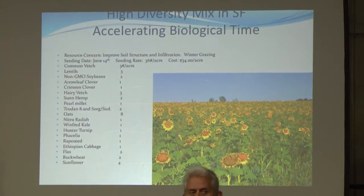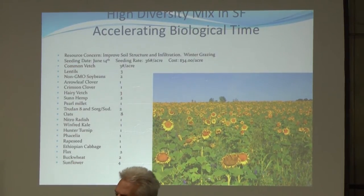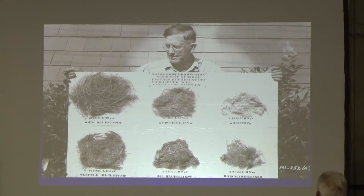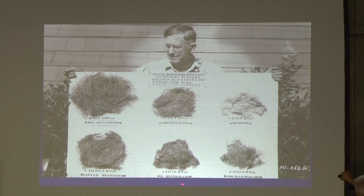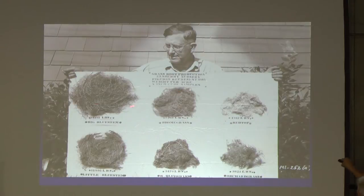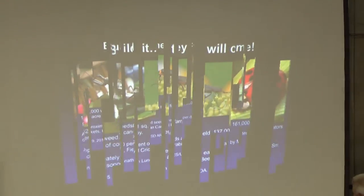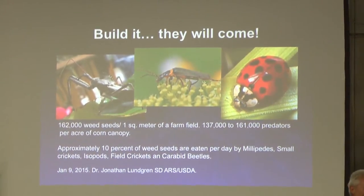Indiana now has 10% of their cropping land covered with cover crops — that is phenomenal to achieve 10% coverage. Look at these grasses — blue stem — which also becomes a food source and conduit for energy.